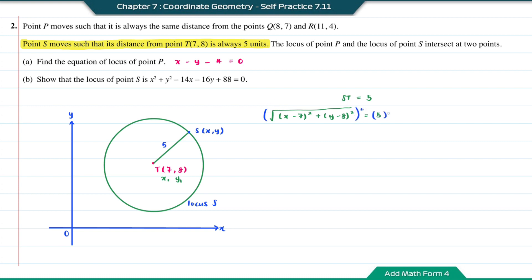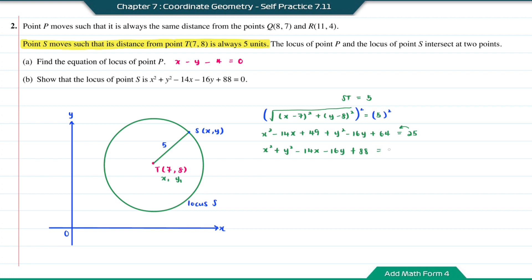Square both sides to remove the square root. Expanding (x minus 7) squared gives x squared minus 14x plus 49. Expanding (y minus 8) squared gives y squared minus 16y plus 64. This equals 25. Rearranging and moving 25 to the left: x squared plus y squared minus 14x minus 16y, then 49 plus 64 minus 25 gives positive 88, equal to 0.